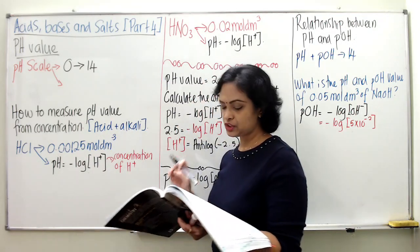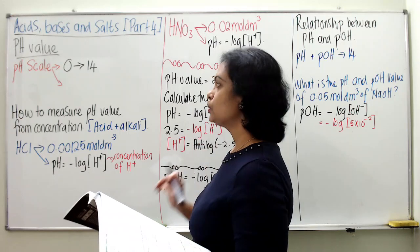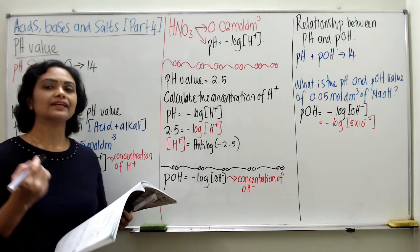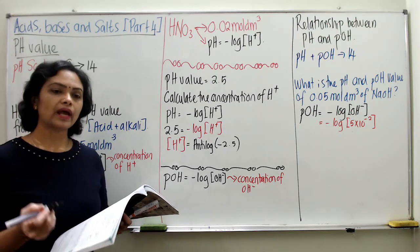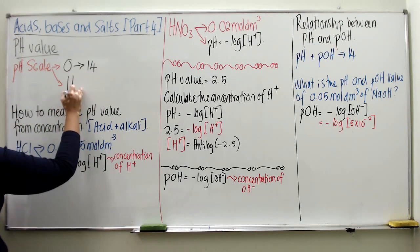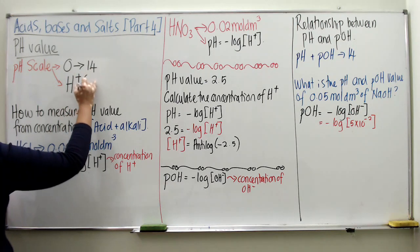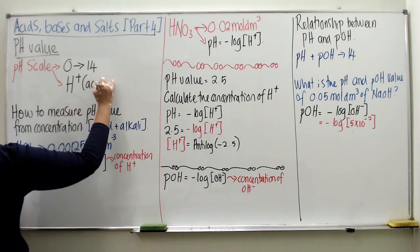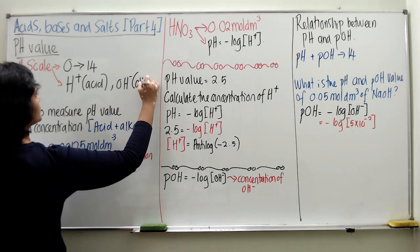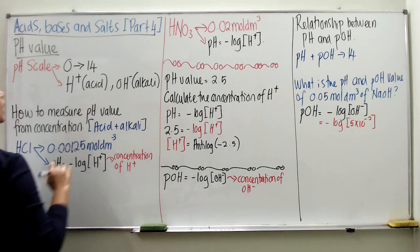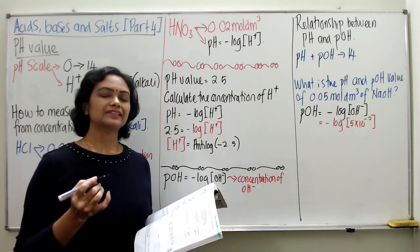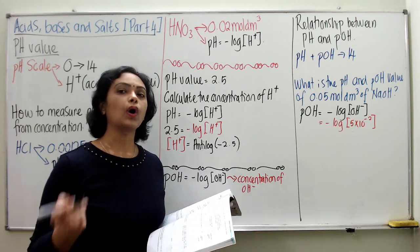Now, what is measured by each pH value? pH value actually measures the amount of Hydrogen Ion, which is for Acid, and the amount of Hydroxide Ion for Alkali. This shows how much Hydrogen Ion is present in a certain Acid or Alkali.